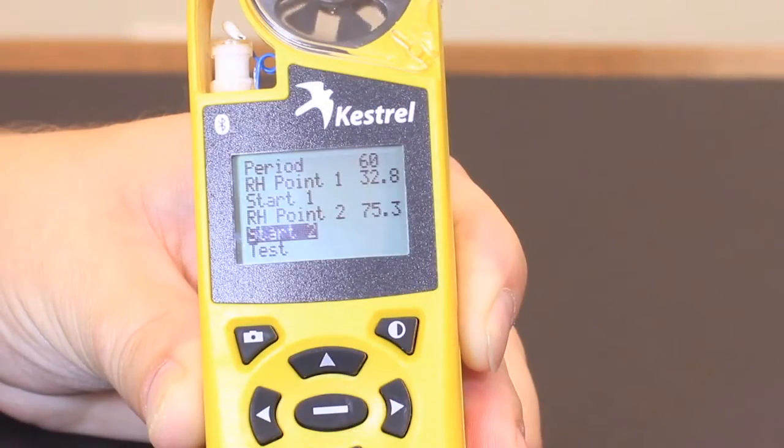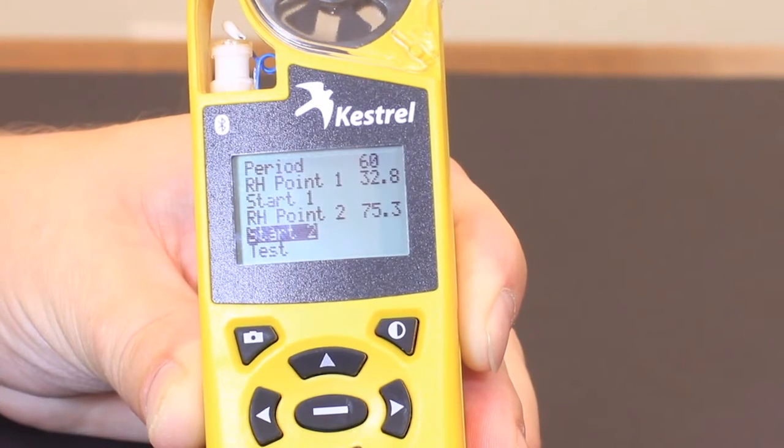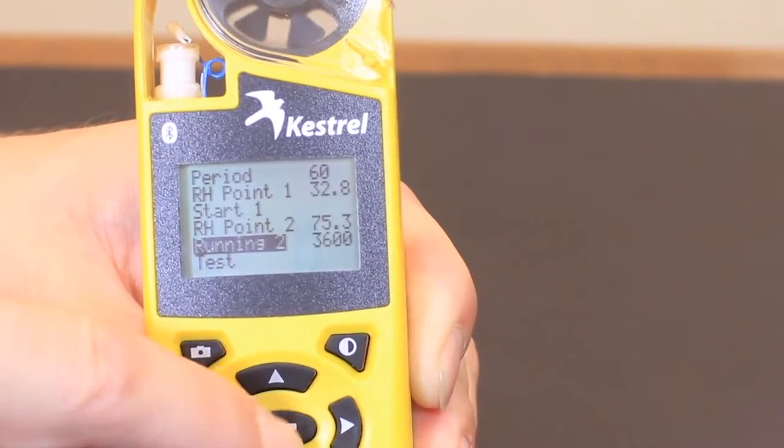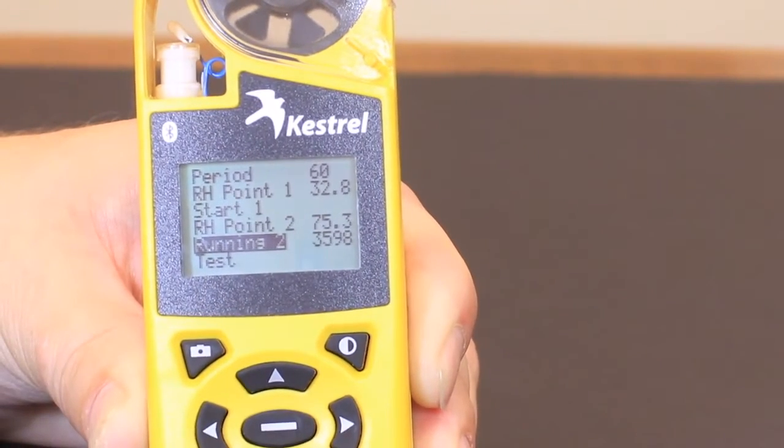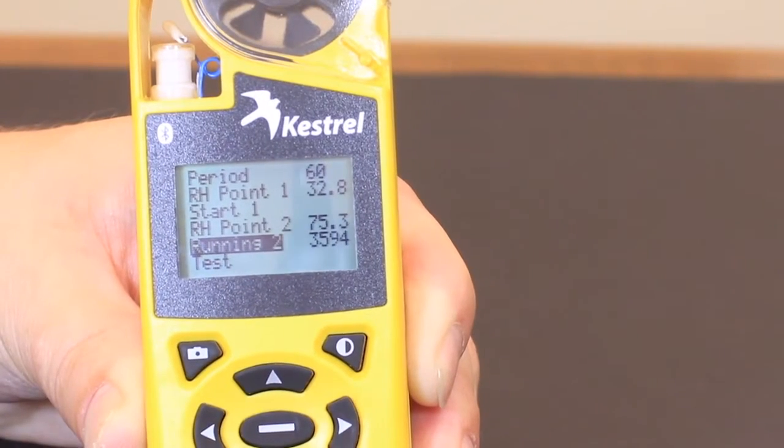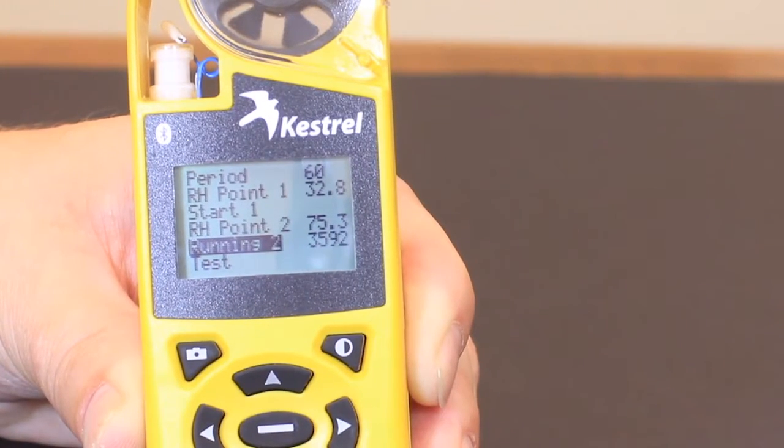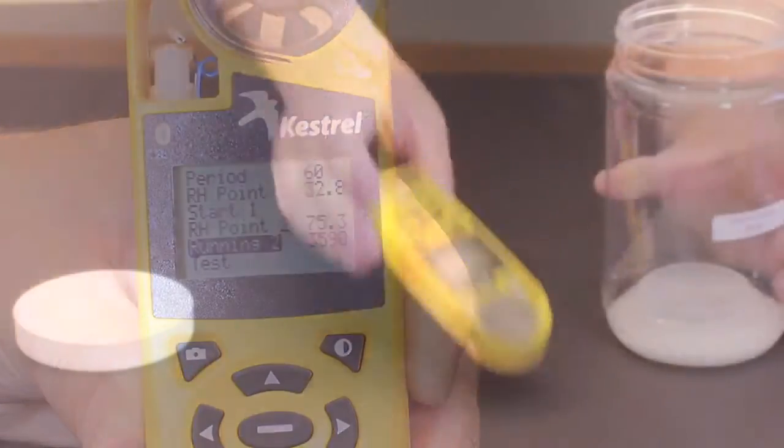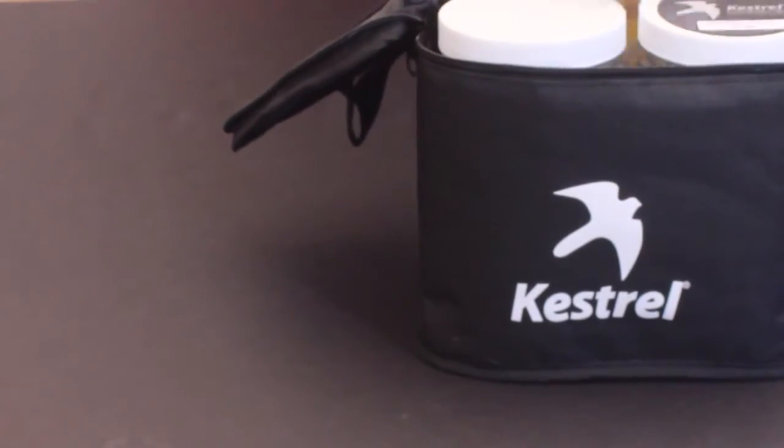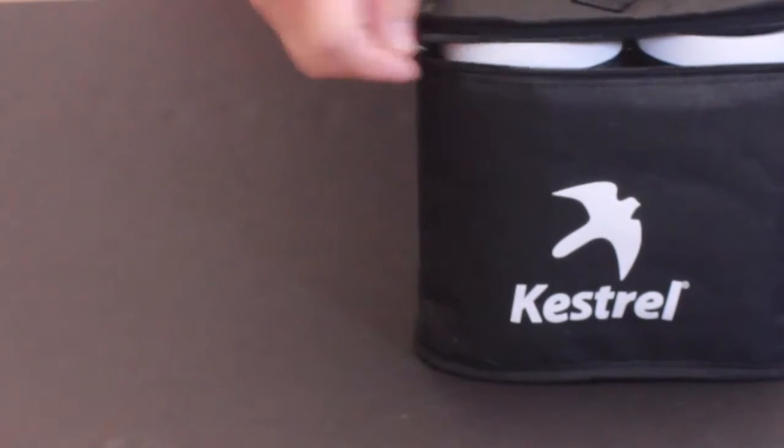We just pulled the 4500 from the first calibration chamber and now we're ready to proceed for the second calibration. We'll go to Start 2, hit the center button. Again it'll start counting down from 3600 seconds. We're going to take the Kestrel, put it now in the second calibration chamber, and wait an hour. We're going to open this up, put it in the sodium chloride chamber, tighten this up, and put it back in to leave undisturbed for another hour.